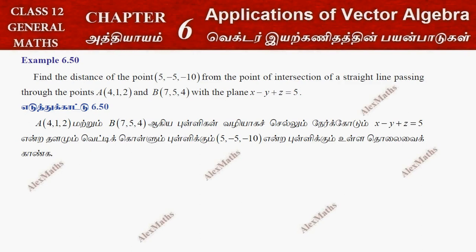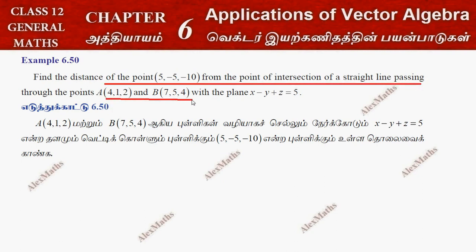Hi students, this is Alex here. Example 6.50: Find the distance of the point from the point of intersection of a straight line passing through A and B with the plane.